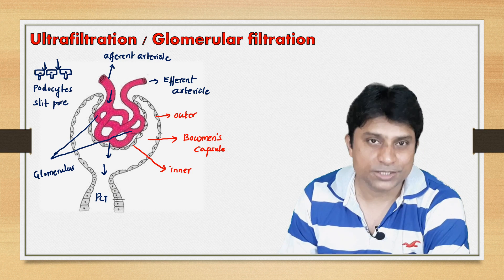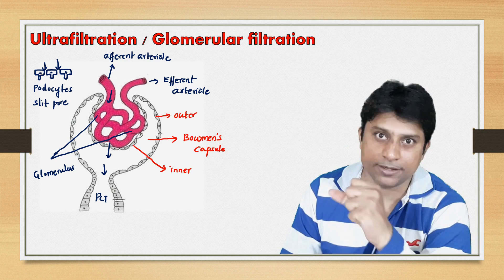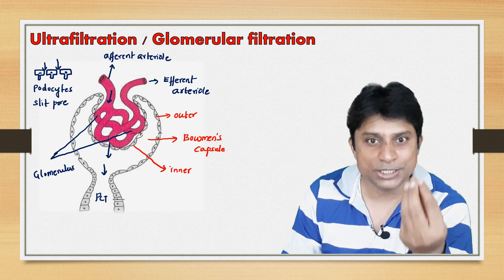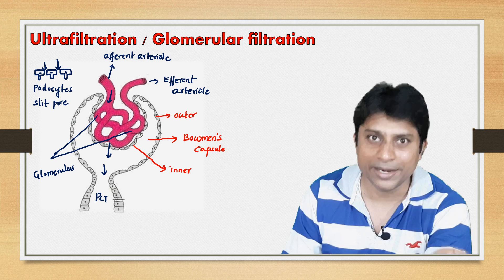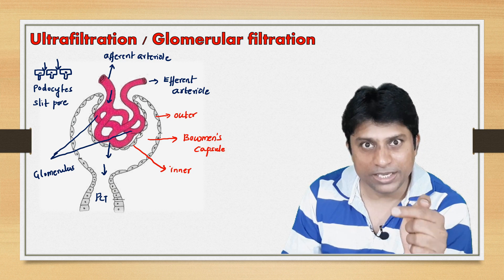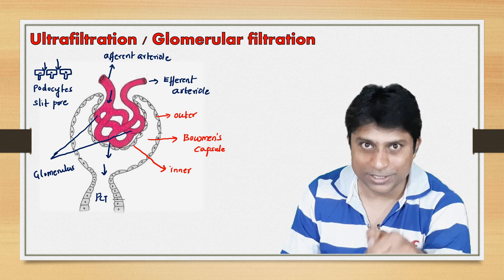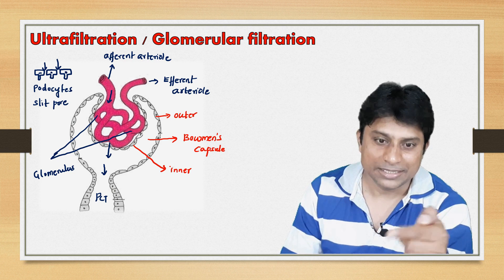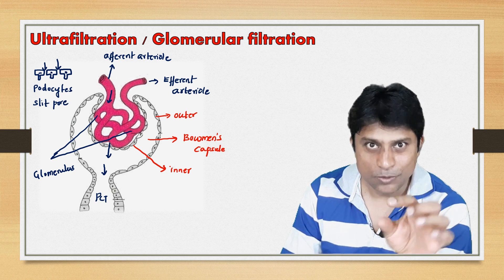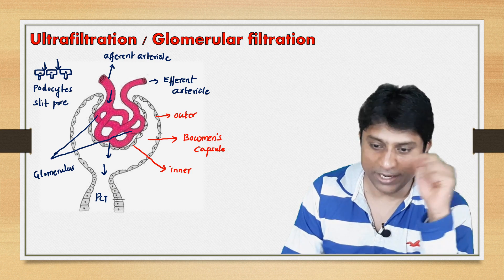One more important point: the glomerulus is a capillary network. This capillary network is also lined by squamous epithelium — single-layered cells. The squamous epithelium of the glomerulus and the squamous epithelium of the Bowman's capsule, along with the basement membrane between these two, will form the filtration membrane.